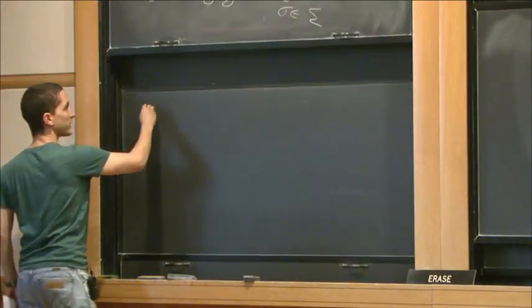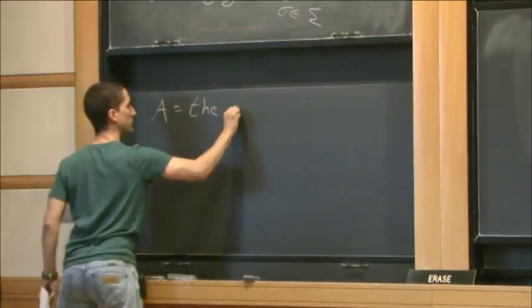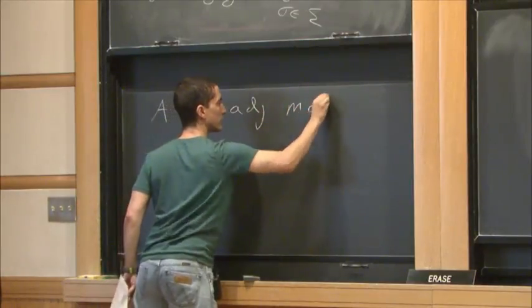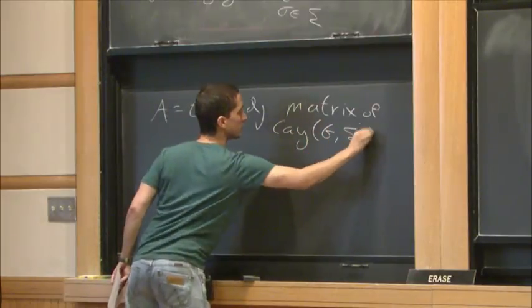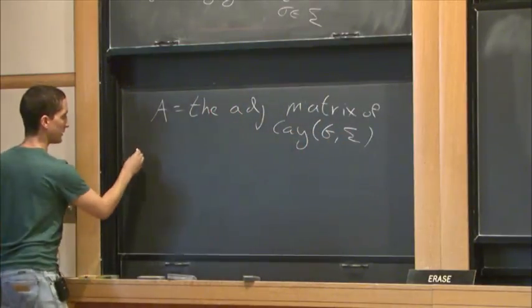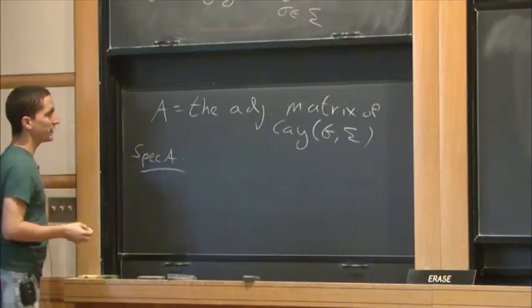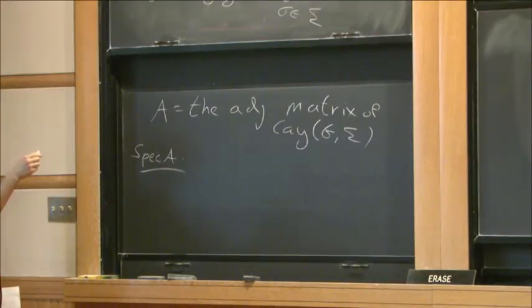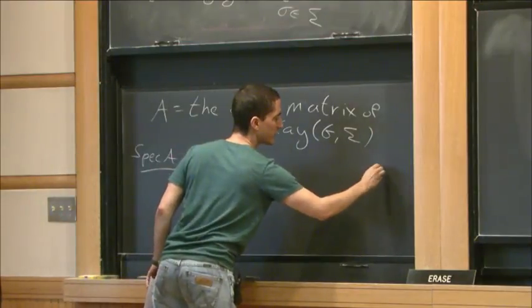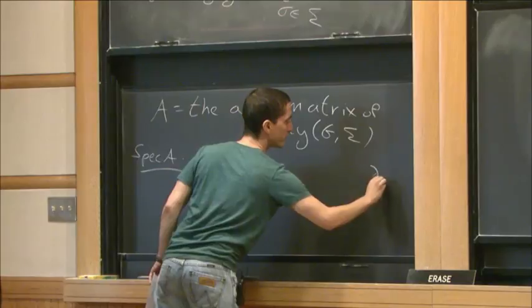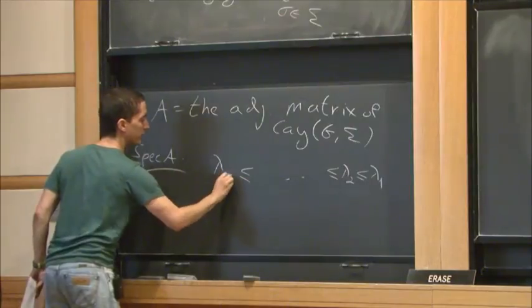And let's say that we look at A is the adjacency matrix of the Cayley graph. So now the spectrum of A, just the set of eigenvalues, the graph has the number of vertices like the size of G, and all the eigenvalues are real, so we can order them up to lambda of the size of G.